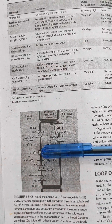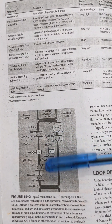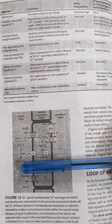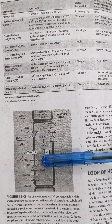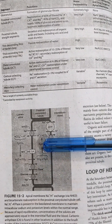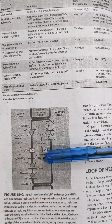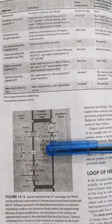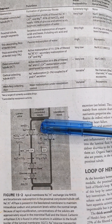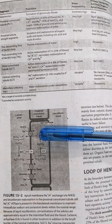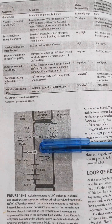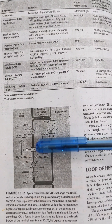Carbonic anhydrase also has a role inside the tubular cell. When CO2 enters from the tubular lumen into the cell, it is converted into carbonic acid. If carbonic anhydrase is inhibited, carbonic acid is not formed, protons are not generated, and sodium reabsorption cannot occur. This is the action of carbonic anhydrase inhibitors.